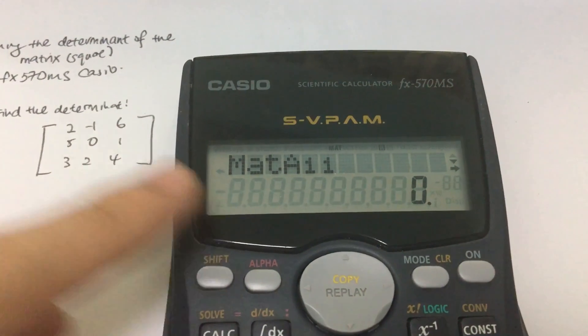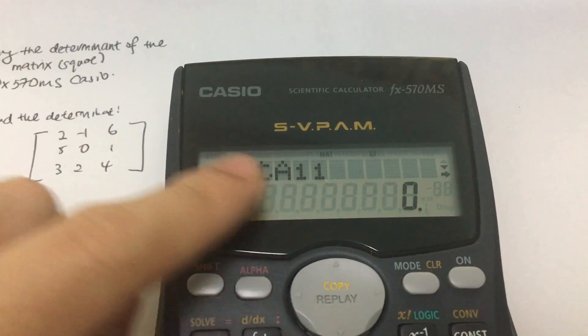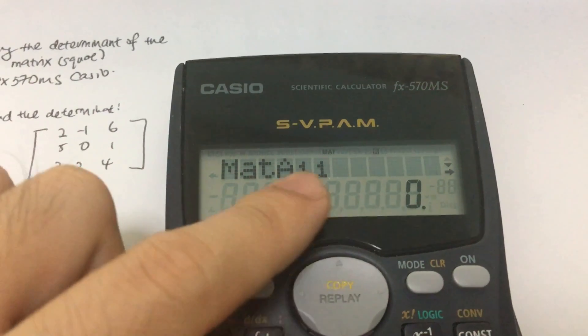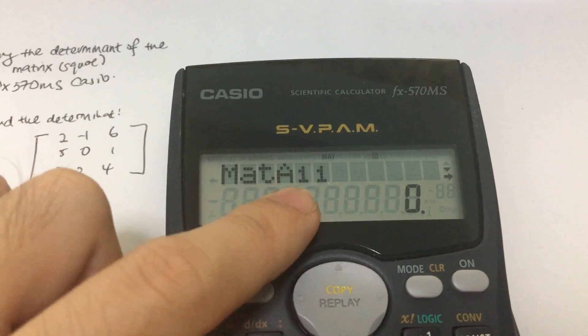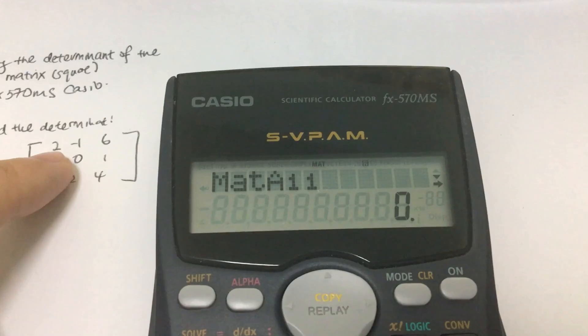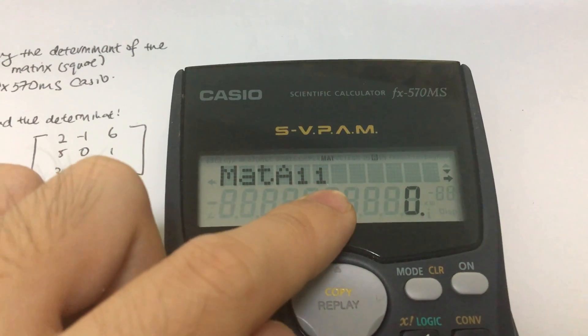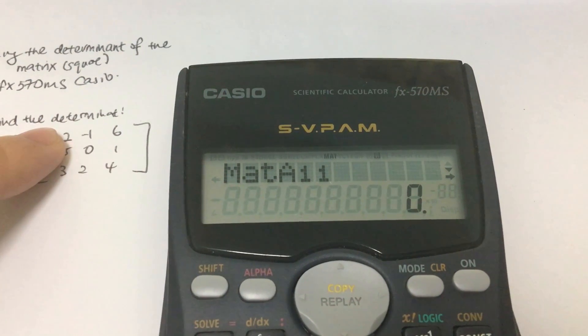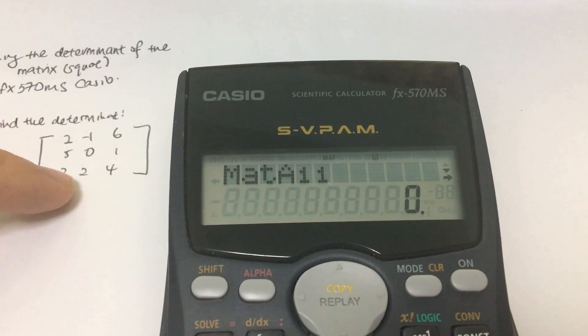And after that we key in the values of each of the rows and columns itself. For example, A1. The first number represents the row, one, and then the second value itself represents the column, one. So this column is first column. So this is two.